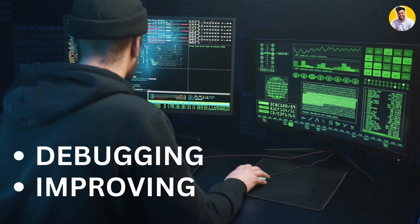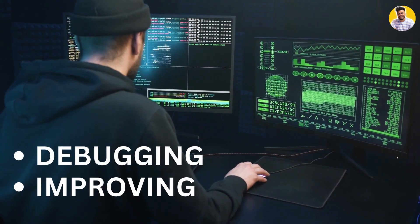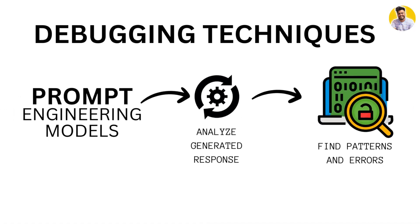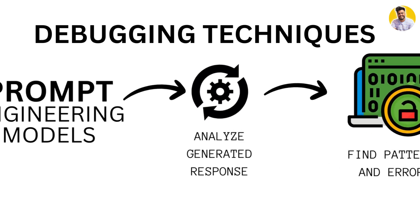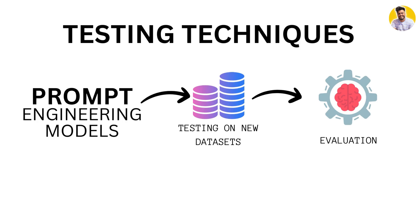Once we have evaluated our prompt engineering models using these metrics, we can move on to debugging and improving them. One common technique is to analyze the generated responses and identify common errors or patterns. This allows us to fine-tune the models and make improvements.